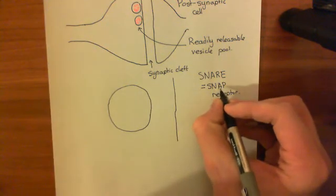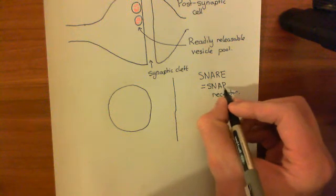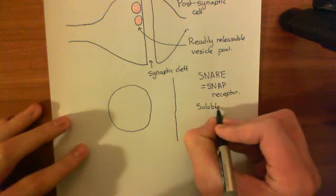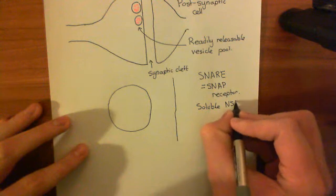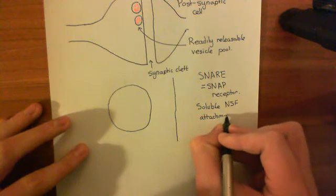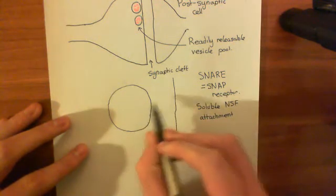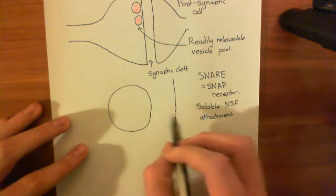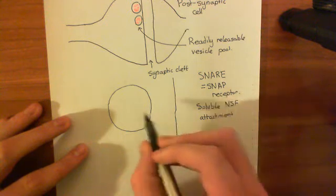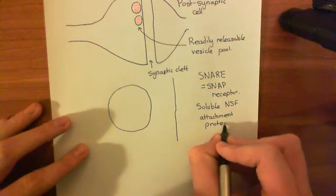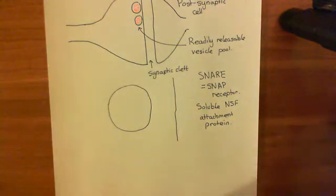SNARE stands for SNAP receptors — the SNA comes from SNAP and the RE from receptor. SNAP stands for soluble NSF attachment protein. What we think is that soluble NSF attachment protein isn't actually that important in the binding of the SNARE proteins to one another, and it's not important in the docking of vesicles to the membrane or the actual fusion events. Instead, we think it's important in the recycling process of synaptic vesicles, and we'll discuss it more later in this playlist.